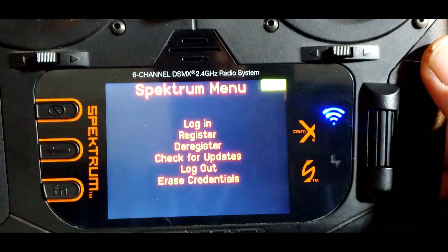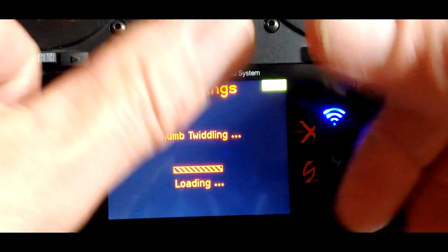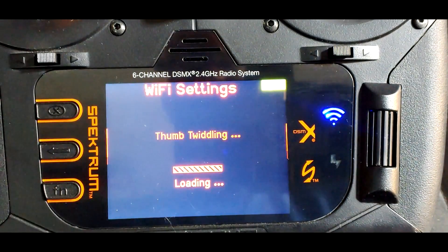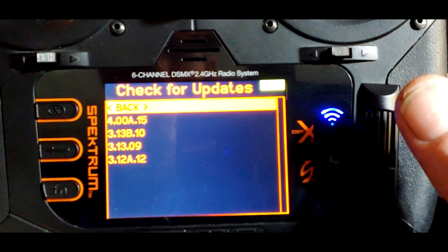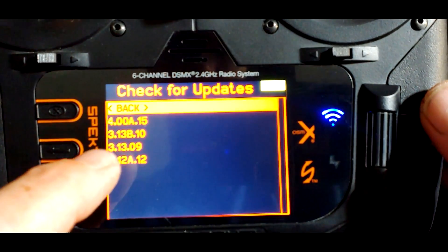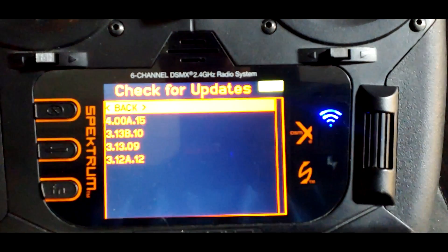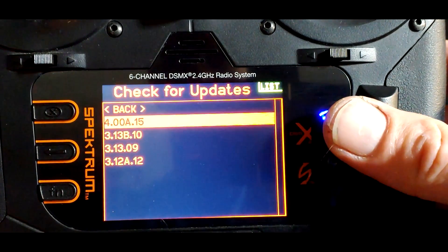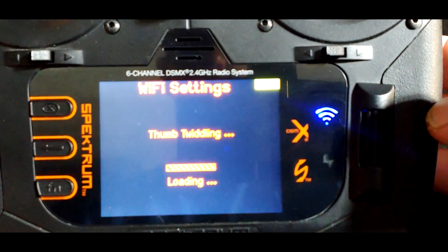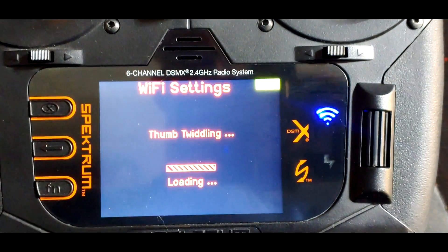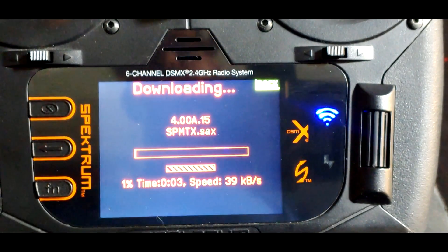And we're going to go down here and check for updates. It's thumb twiddling. And here it says that the latest one available for us is the 312, 313, 313, and the 4.0. We're going to go ahead and select this 4.0.